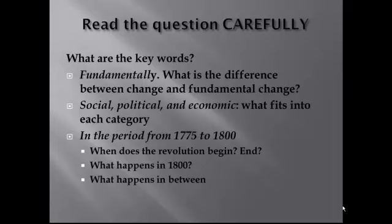You also need to think about time period, and the time period here is trickier than you might think. The question asks about the American Revolution, but the time period you're expected to cover goes from 1775 — Lexington and Concord — to 1800. What happens in 1800? That's the election of Thomas Jefferson. So we're talking about not only the entire Revolutionary War but the entire founding era. That's a big period of time, and if you don't cover at least some of those post-Revolutionary War events, you're going to lose out in the scoring rubric.